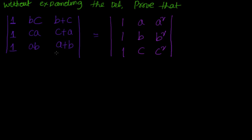That means this should be eliminated when I convert from left to right. So how to do that is I see that B+C is nothing but equal to A+B+C minus A. Similarly, in the second row C+A is nothing but equal to A+B+C minus B. Similarly, in the third row A+B is equal to A+B+C minus C.